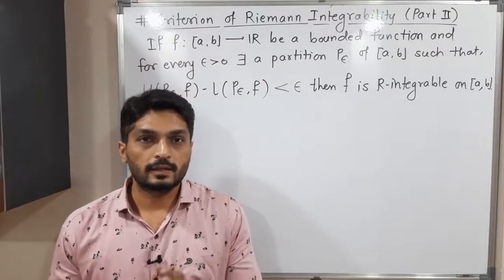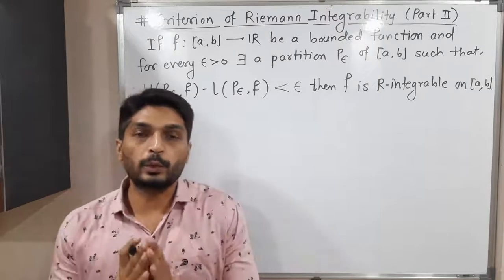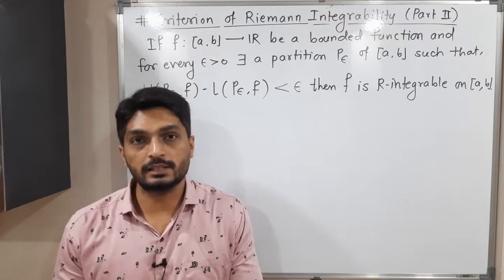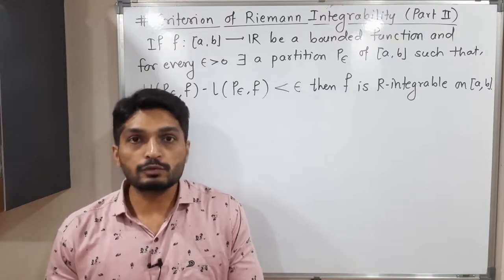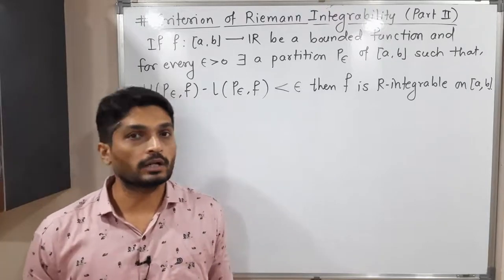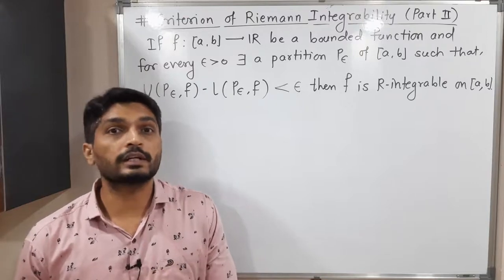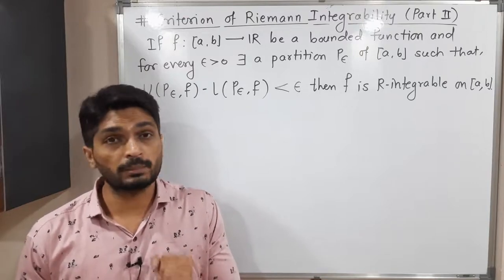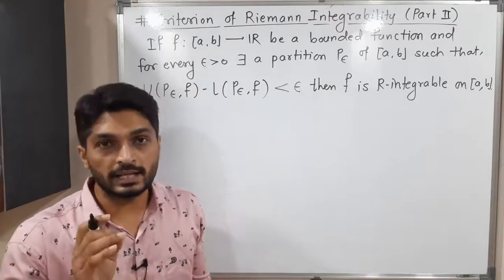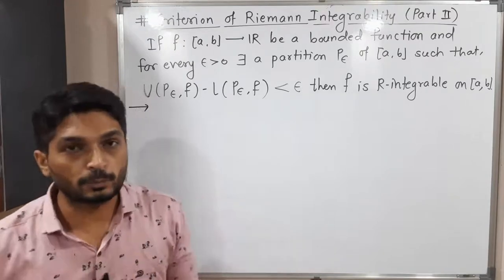Let us discuss the criteria of Riemann integrability, part 2. We are going to discuss the converse part of this theorem. In the previous video, we already saw the first part. In the converse part, we have the following information: F defined from closed interval [A, B] to R is a bounded function, and for every epsilon greater than 0, there exists a partition P-epsilon of [A, B] such that the upper sum minus the lower sum is less than epsilon. We have to prove that the function is Riemann integrable. Let us start to prove.